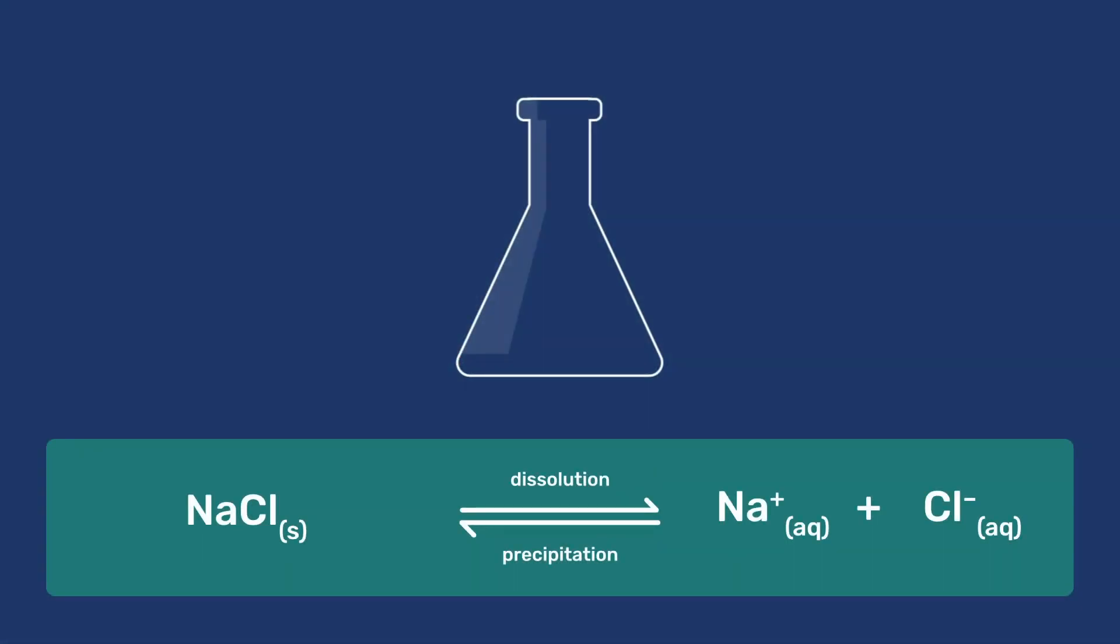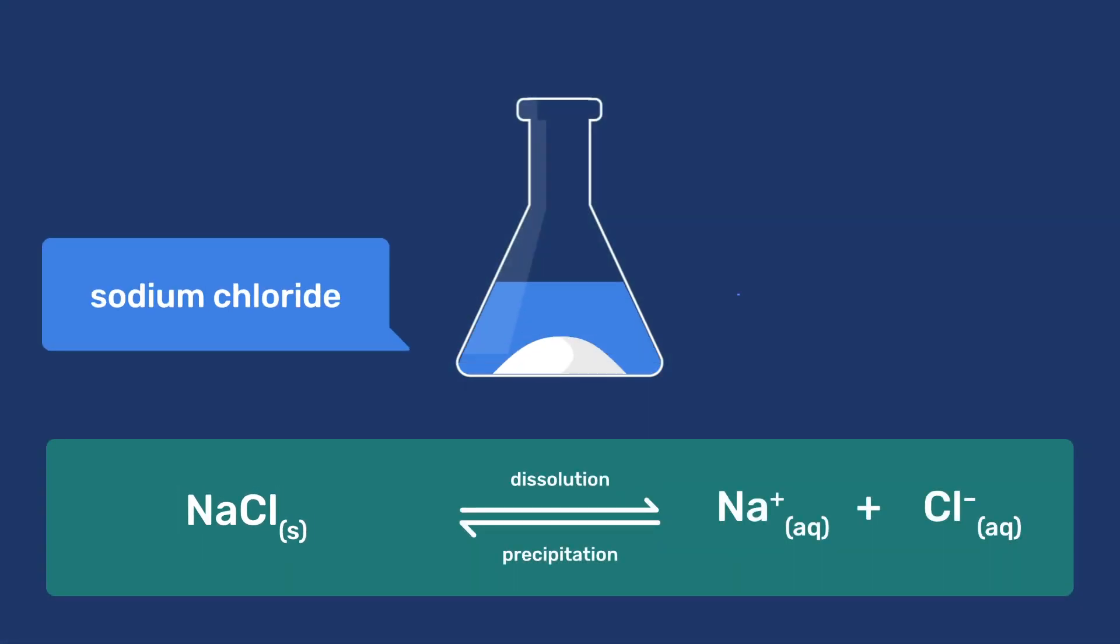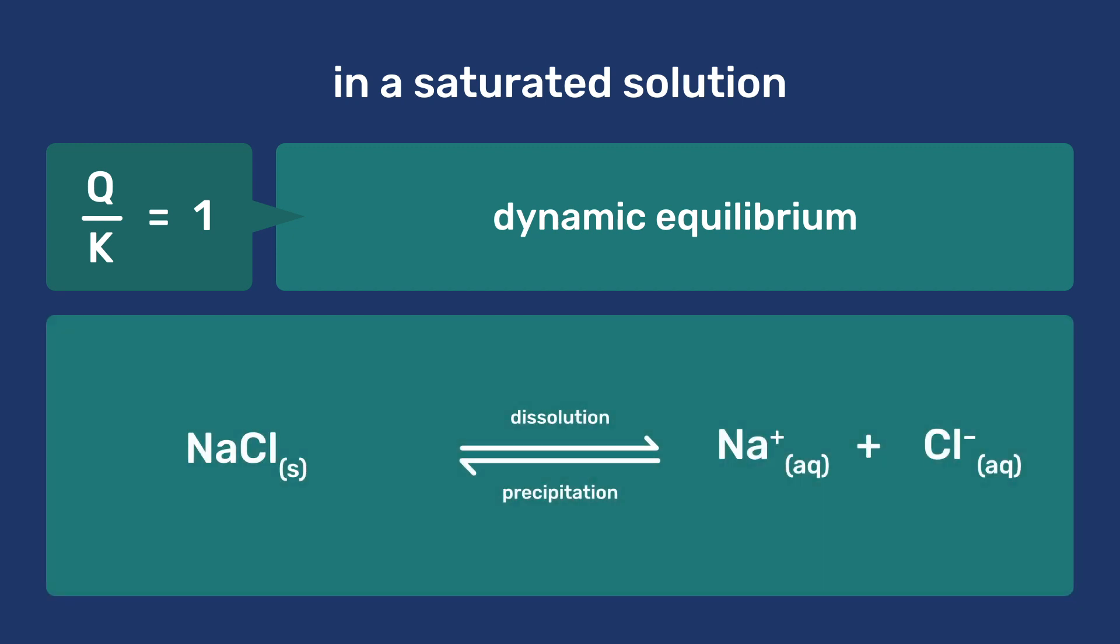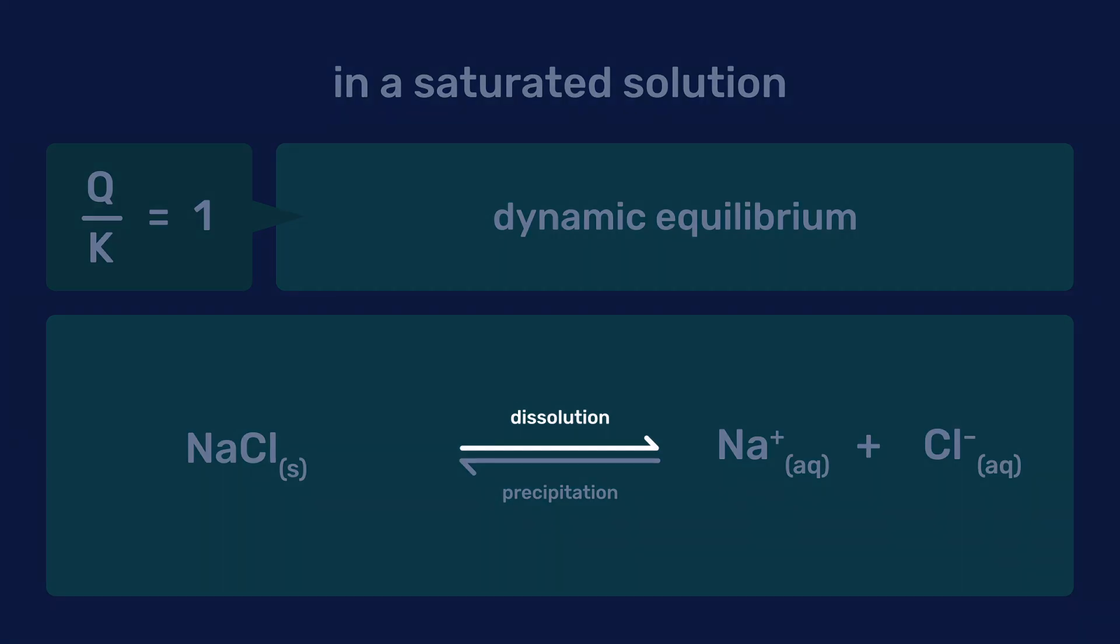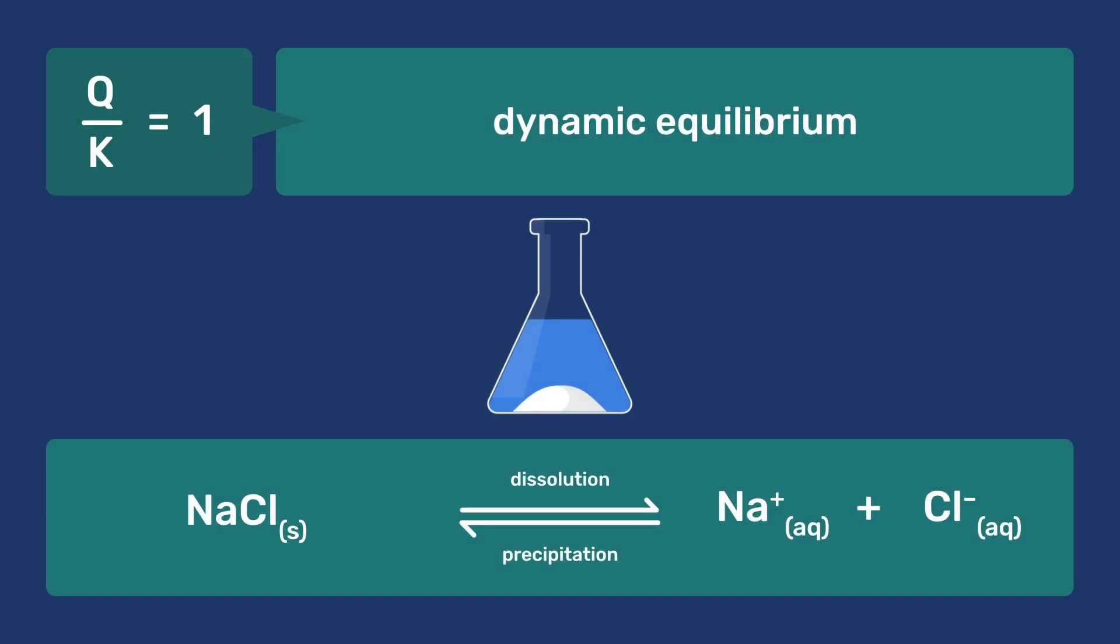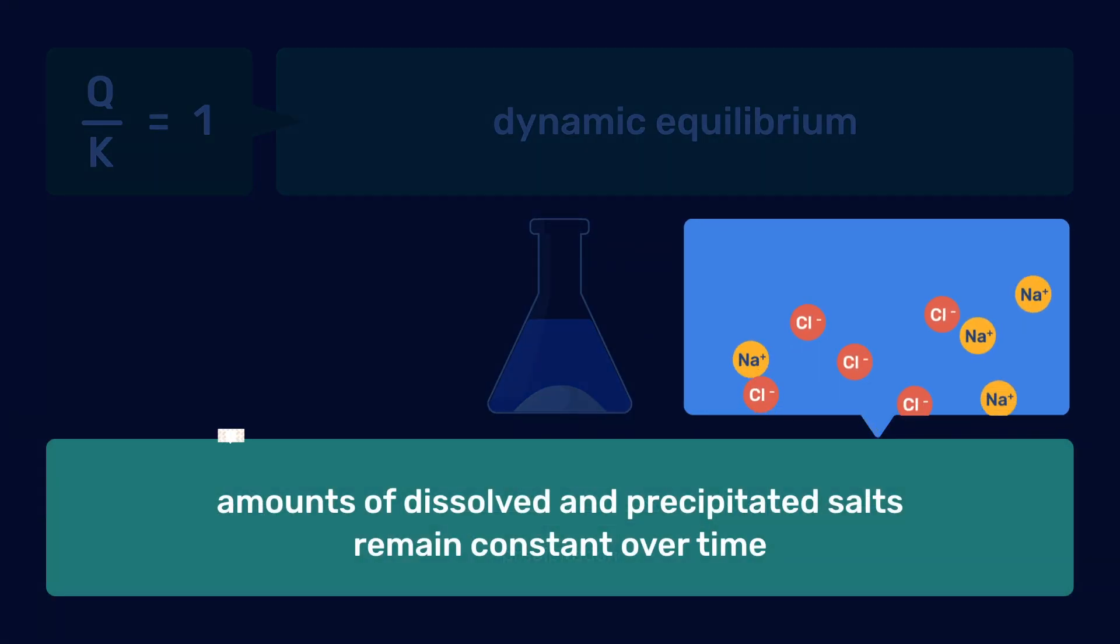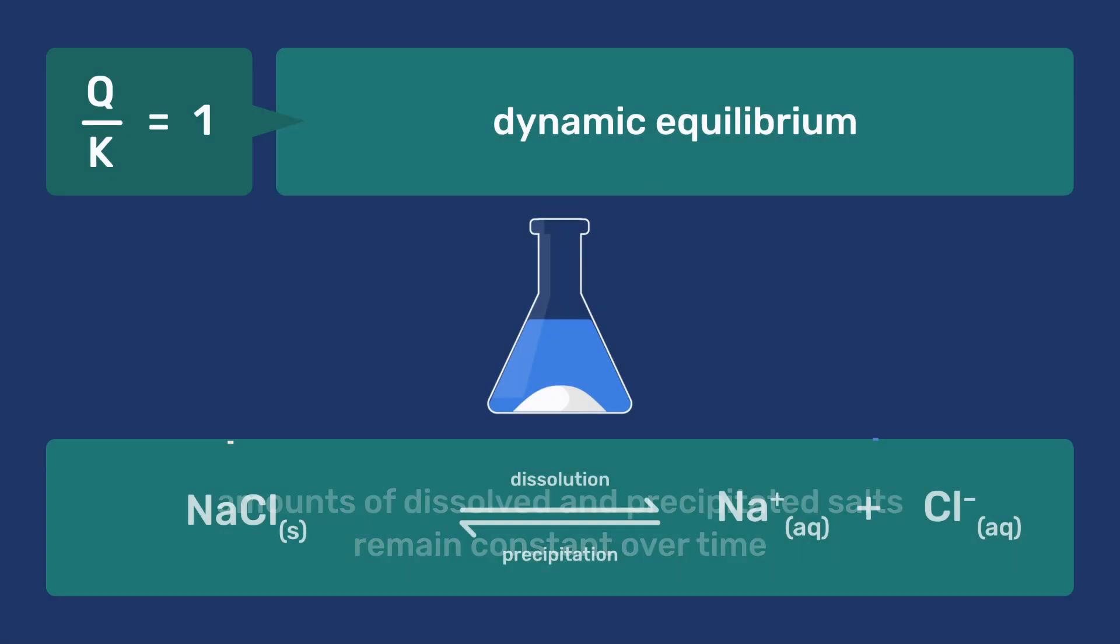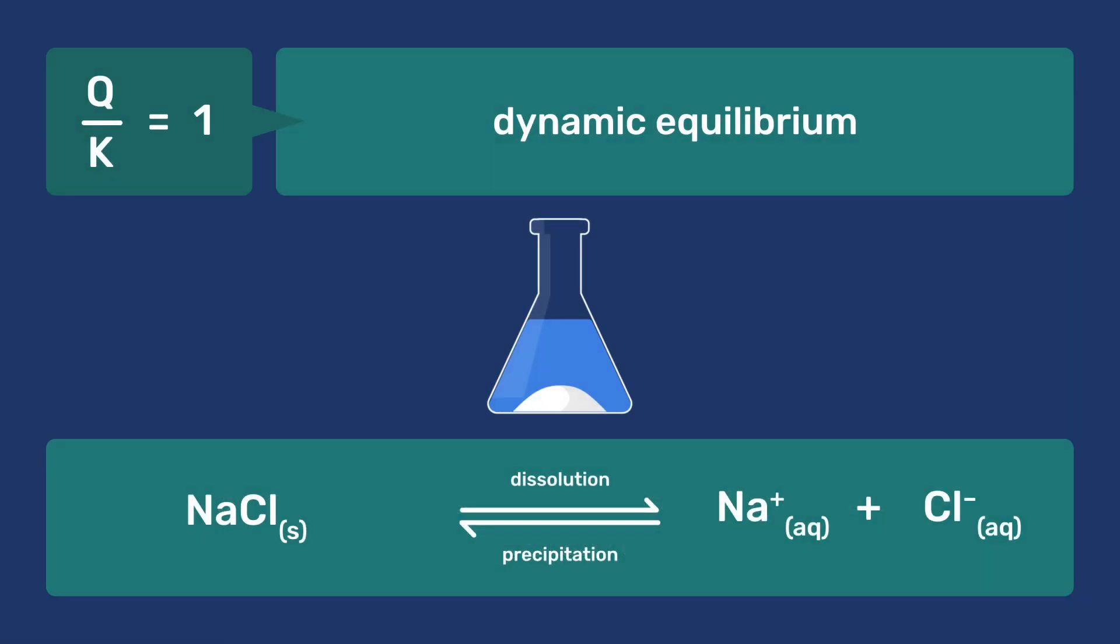Let us take the case of sodium chloride and water as an example. In a saturated solution, there would be a dynamic equilibrium in which the rates of dissolution and precipitation of sodium chloride would be equal. In this case, the amounts of dissolved and precipitated salt remain constant over time and the solution is said to be saturated.